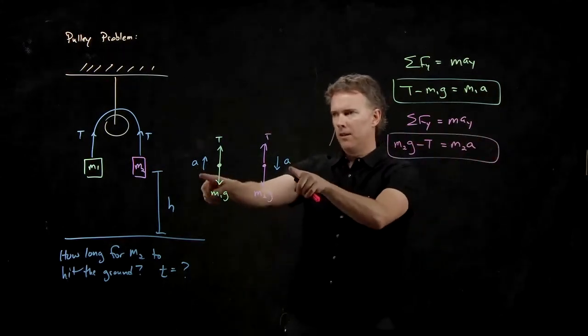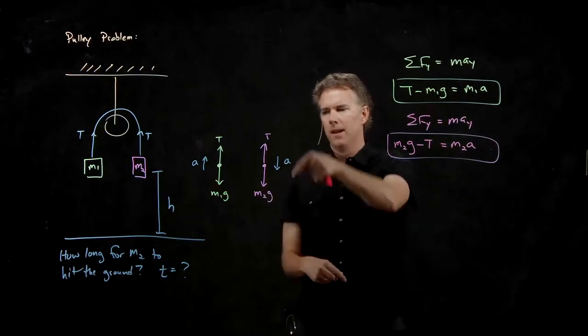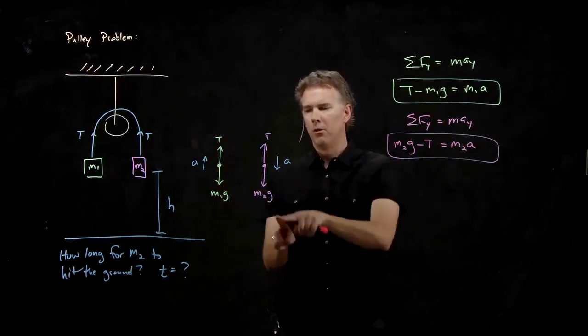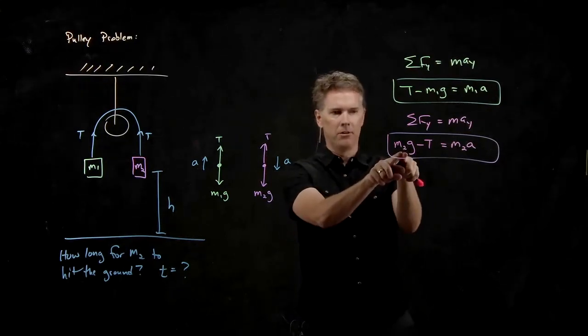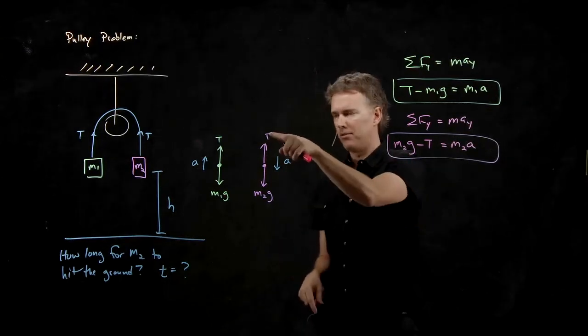And this is what we mean by this acceleration constraint. If this one's falling, that one's going up. So pick the forces that are in the same direction as A and make those positive. The ones that are opposite make them negative.